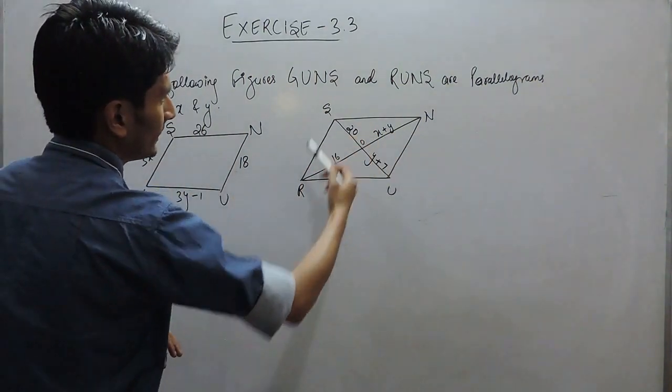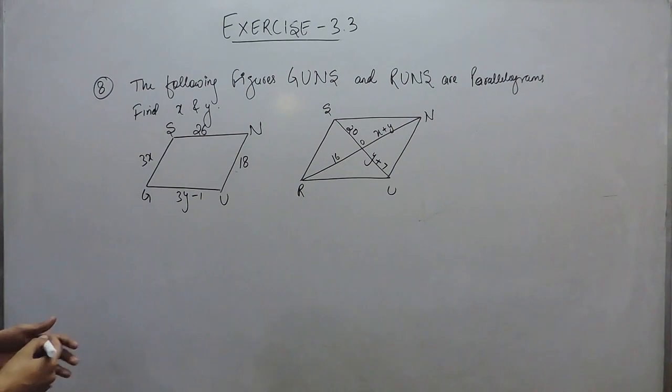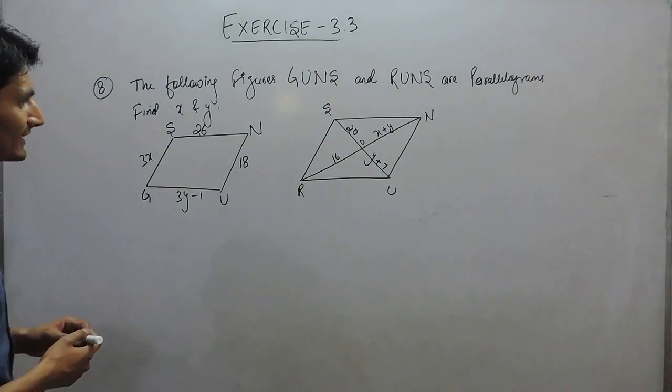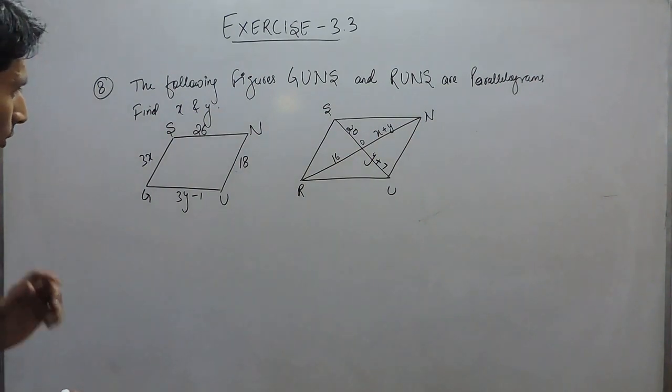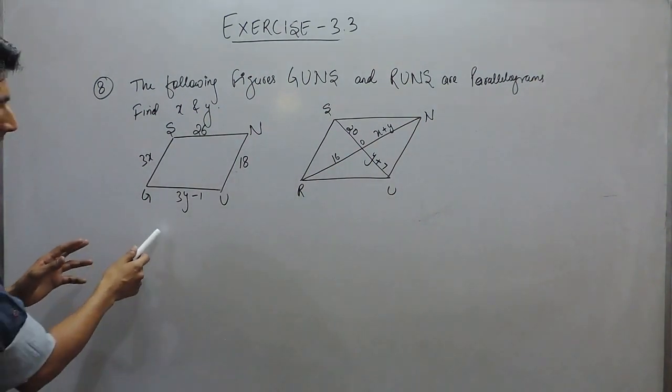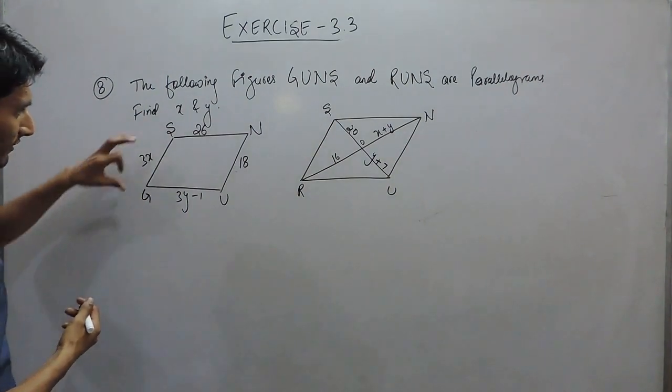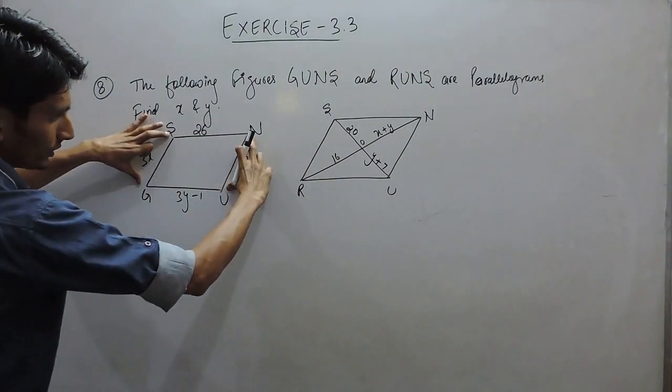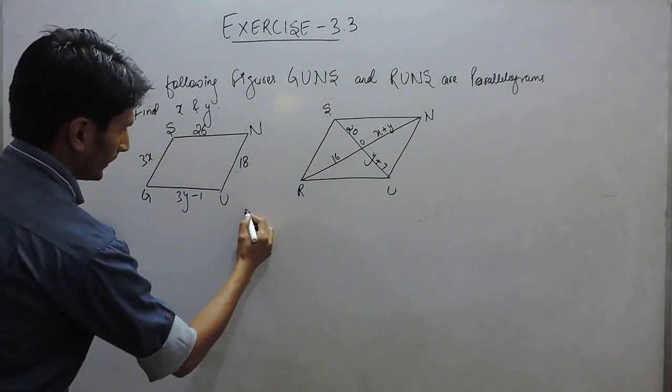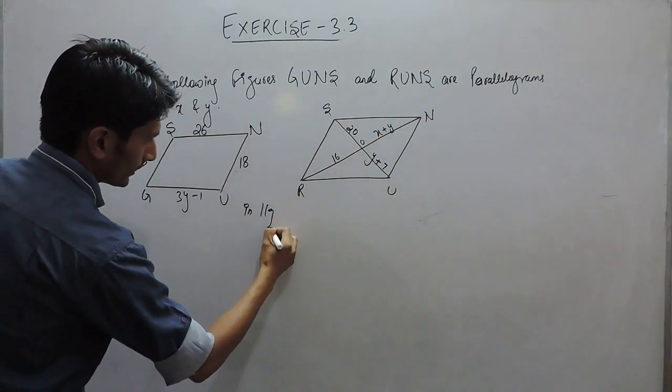you are given two quadrilaterals and these are basically parallelograms and you have to find the value of x and y. We know that in a parallelogram, opposite sides are equal and parallel. So the value of this must be equal to this.